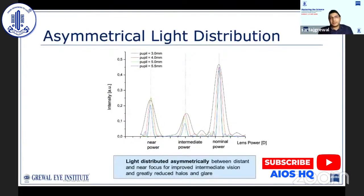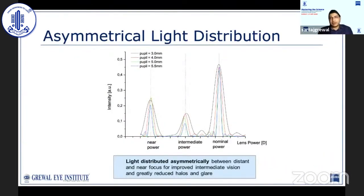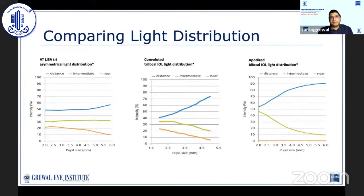This graph shows that at a wide range of pupil sizes, from 3 to 5.5mm, the lens still continues to provide three distinct focal points. Even trifocals with convoluted surfaces, where the steps are rounded and smoothened, show a fall in both near and intermediate vision with increasing pupil sizes. Unlike with an apodized surface, the AT-LISA's symmetric light distribution preserves near vision with increasing pupil size.